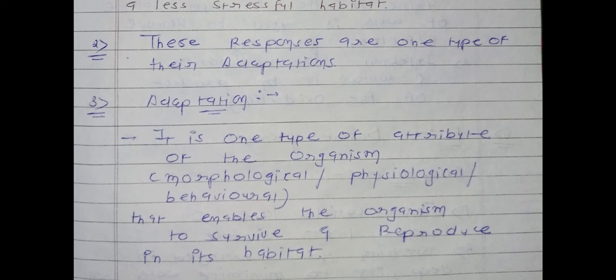Point number three gives us the definition of adaptation. Adaptation is one type of attribute of the organism — a mechanism. Three words are used: morphological, physiological, and behavioral. Morphology means external features; physiology means activities occurring inside the body; behavioral means things like color changing or mimicry. It is an attribute that enables the organism to survive and reproduce in its habitat.